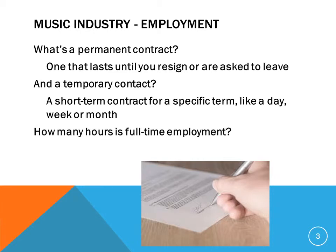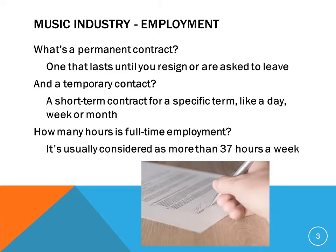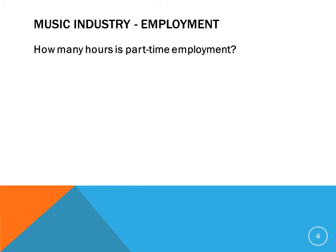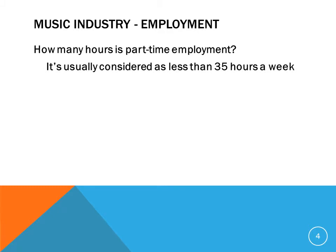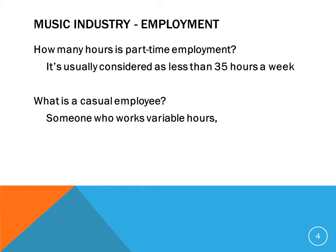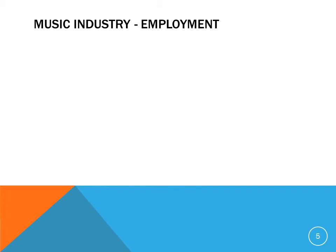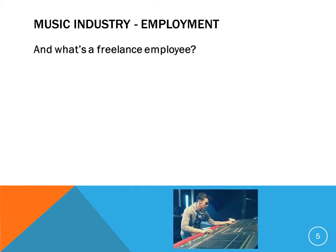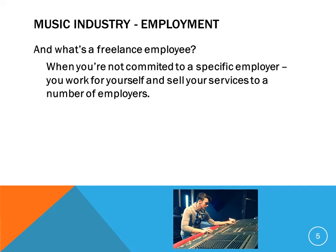How many hours is full-time employment? It's usually considered as more than 37 hours a week. How many hours is part-time employment? It's usually considered as less than 35 hours a week. What is a casual employee? Someone who works variable hours. And what's a freelance employee? When you're not committed to a specific employer, you work for yourself and sell your services to a number of employers.